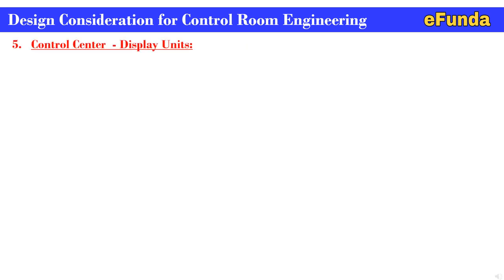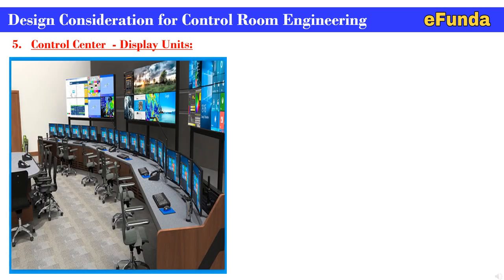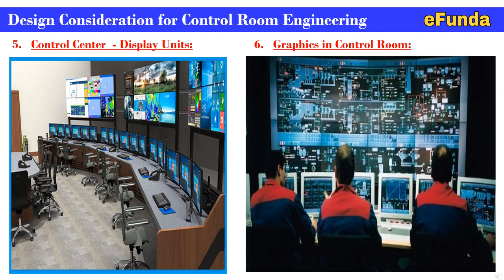The control center display unit section covers various types of display units used for engineering and operating workstations. There is a display screen in front of each operator where the entire operation or process can be monitored. Graphics in the control room display the entire operation cycle on screen, with various operation statuses being monitored by operators on their individual workstations.